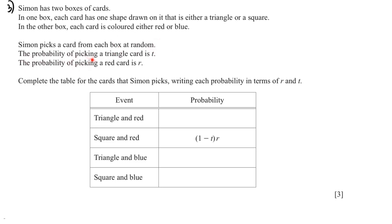The probability of picking a triangle card is t and the probability of picking a red card is r. Complete the table for the cards that Simon picks, writing each probability in terms of r and t.